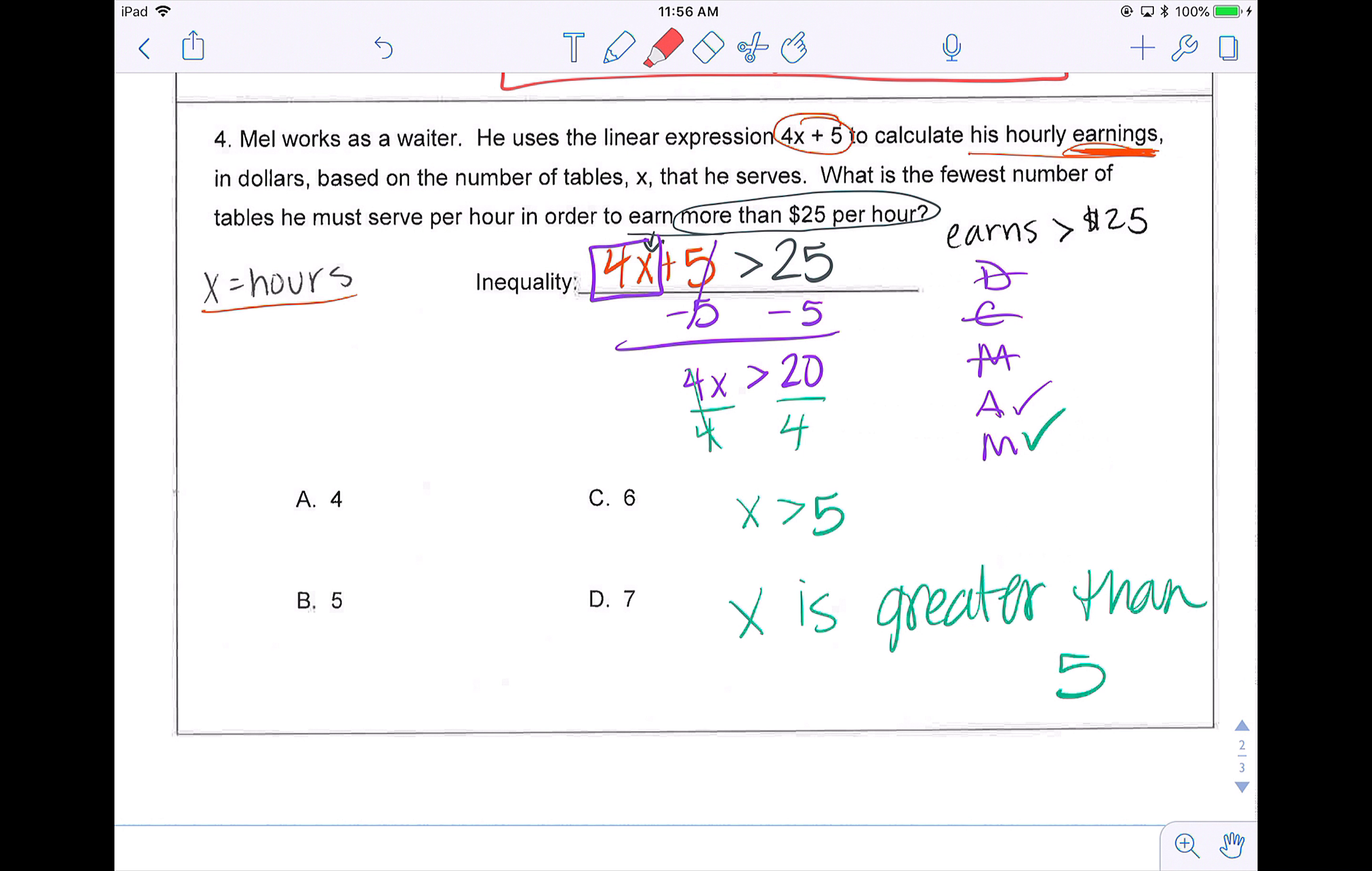Now the question they asked me up here was the fewest number of tables he must serve per hour. The fewest number. So we know that X has to be greater than 5. So it can't be A, it can't be B, because neither of those are greater than 5. But C and D are both greater than 5. The keyword here is that word fewest. The fewest number that he must serve would be the number closest to 5, the next number greater than 5, which would be answer choice C. He could do 7 tables to earn more than 25 per hour, but he wants to know the bare minimum.